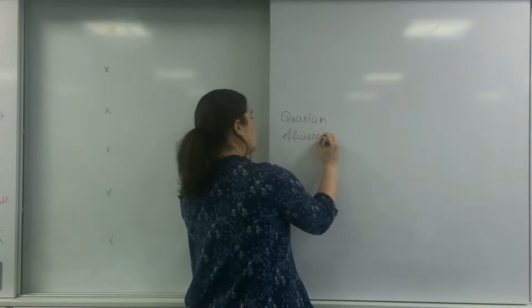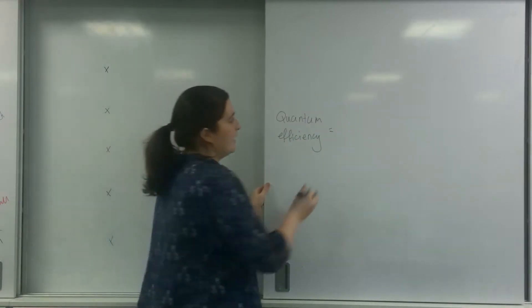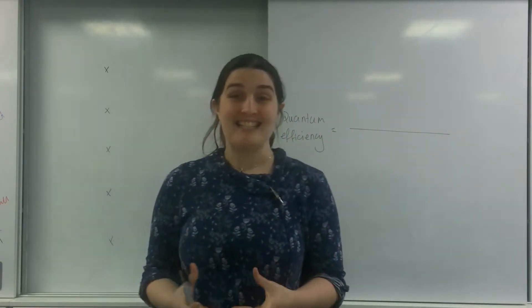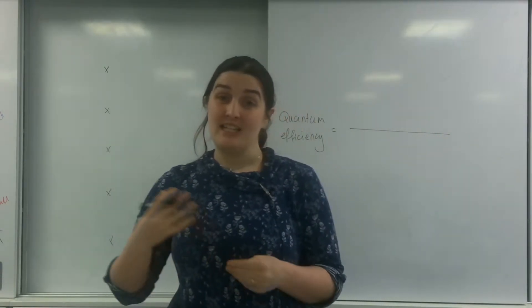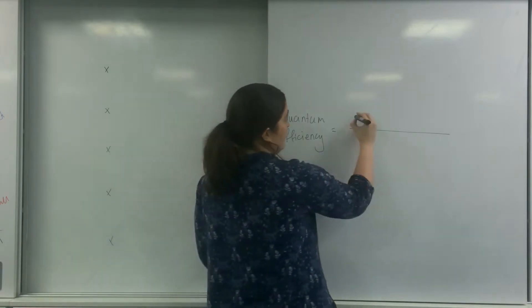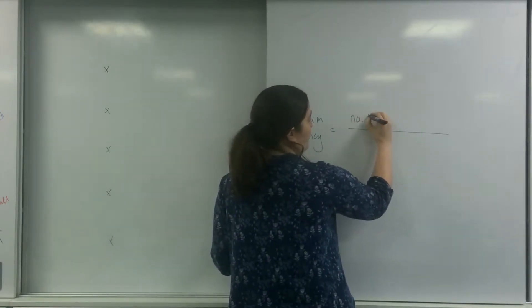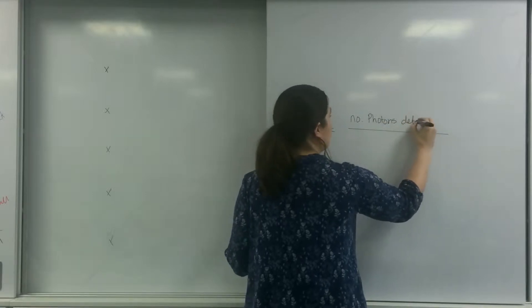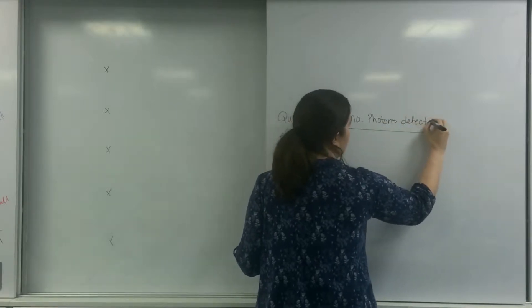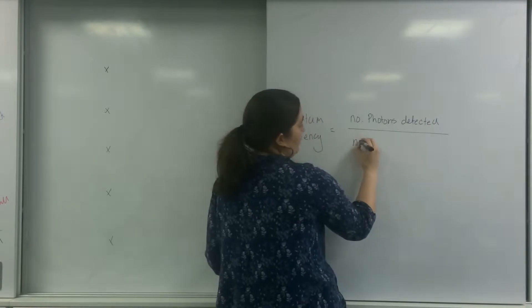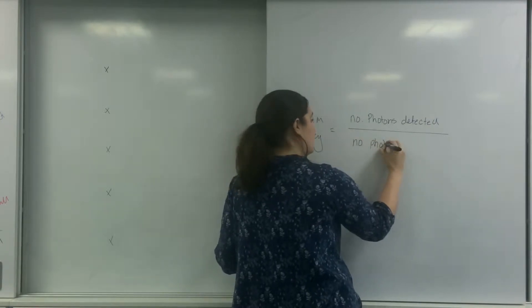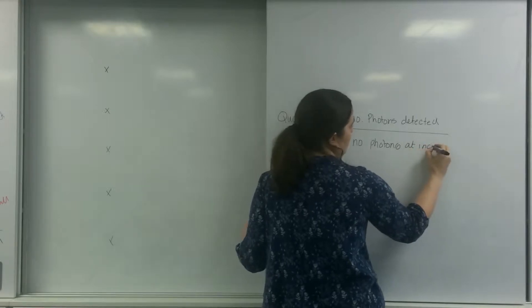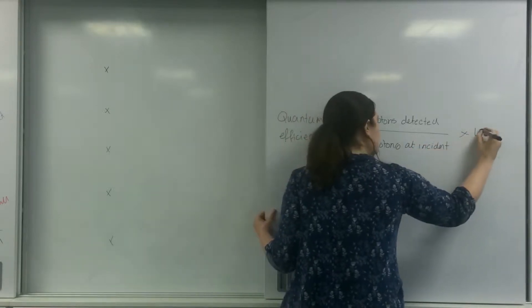The quantum efficiency is basically the number of photons detected versus the number that actually hit it. This is the number of photons detected divided by the number of photons at incident, times by 100.